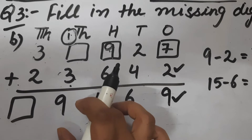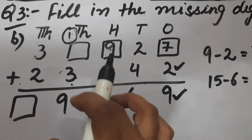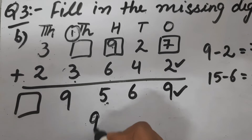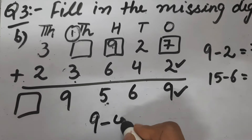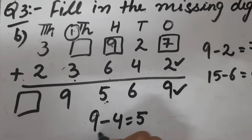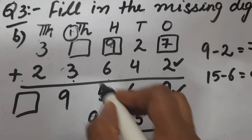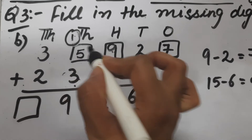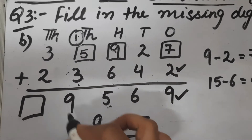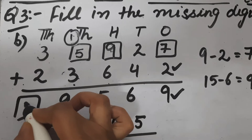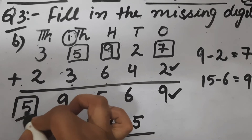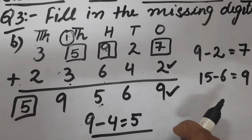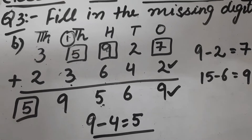Now 3 plus 1 carried is 4. What should be added to 4 to get 9? We subtract 4 from 9, which gives 5. So if we add 5 to 4 we get 9. And 3 plus 2 is 5. This completes part B of question number 3.